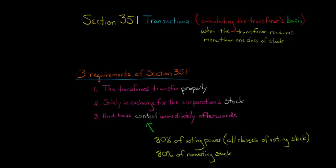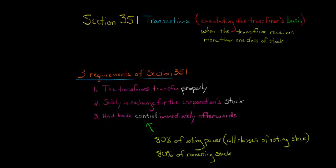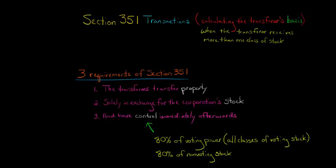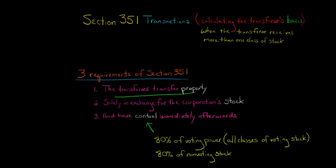In this video, we're going to talk about how to calculate the transferor's basis in a Section 351 transaction when the transferor is receiving more than one class of qualifying stock. Just a quick review: we have a 351 transaction when the transferors are transferring property solely in exchange for a corporation's stock, and then they have control immediately afterwards.